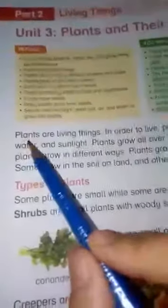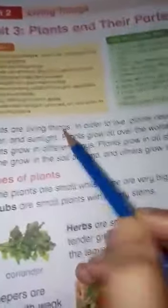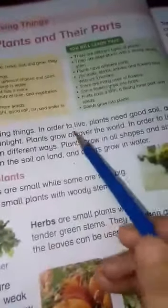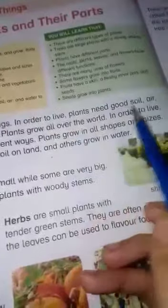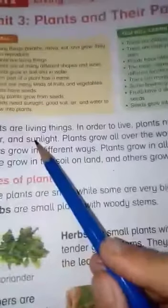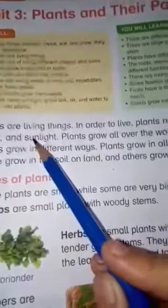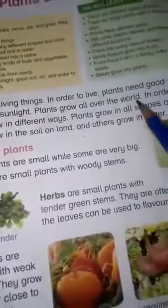Plants are living things. In order to live, plants need good soil, air, water, and sunlight so that they can survive and grow very well. Plants grow all over the world — they are not only in a specific place but are found throughout the whole world.